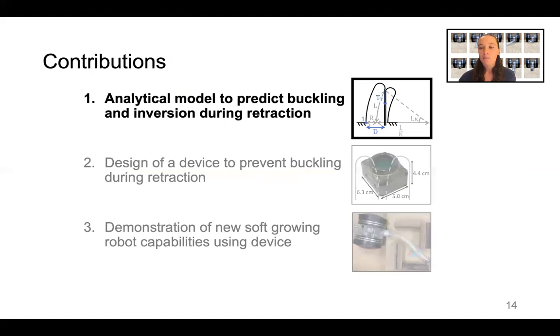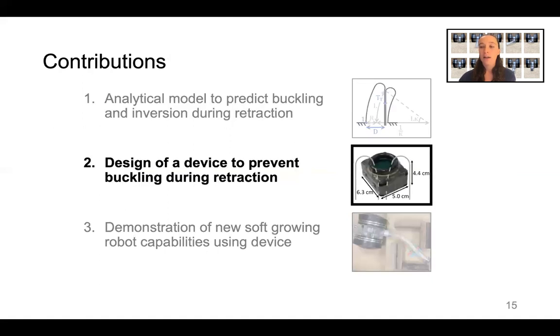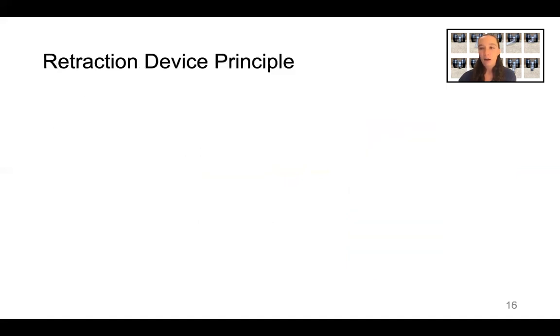Now that I have discussed the model, let me tell you about the device that we designed to exploit the information that we learned from the model. Our retraction device works by making the effective robot length zero for the purpose of retraction.